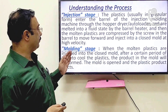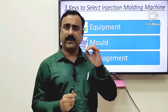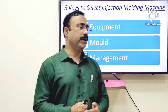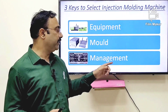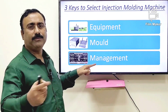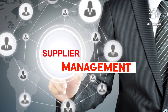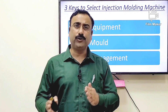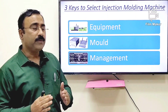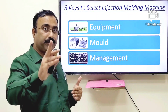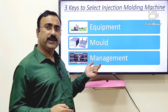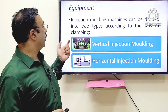There are three keys to selecting an injection molding machine: the first one is equipment, the second one is mold, and the third one is management — meaning the management of the supplier. We have to consider not only the commercial aspect of what we are asking them to supply, but also whether we will get the required product for longer use without breakdown. So the management of the machine supplier is much more important than many people realize.